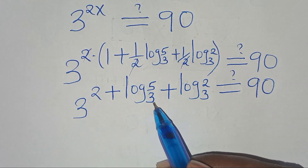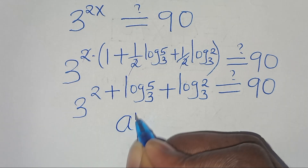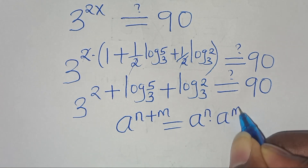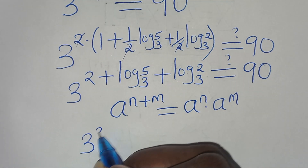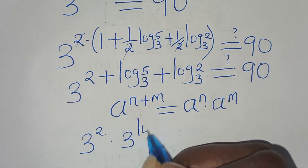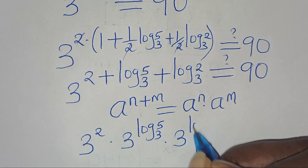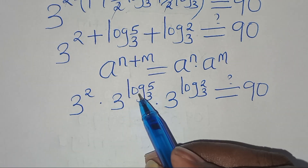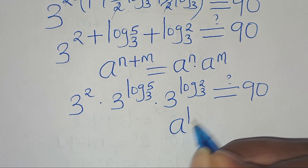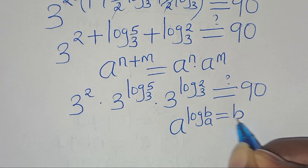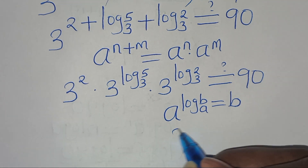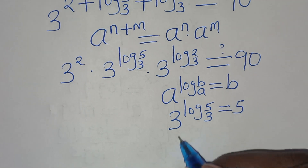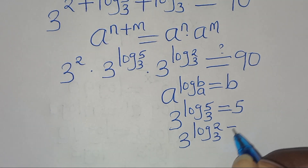Now 3 to the power of (2 + log base 3 of 5 + log base 3 of 2) is in the form a^(m+m+m), which we transform as a product: 3² × 3^(log base 3 of 5) × 3^(log base 3 of 2). Using the property that a^(log_a(b)) equals b, we get 3^(log base 3 of 5) equals 5, and 3^(log base 3 of 2) equals 2.